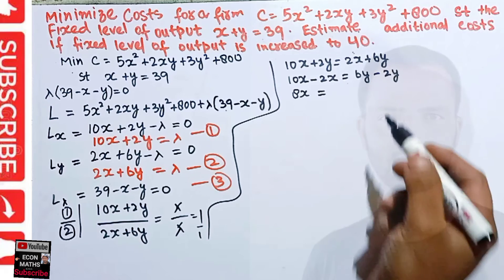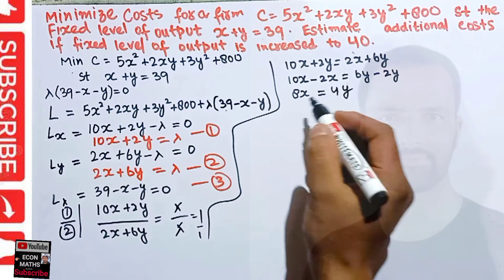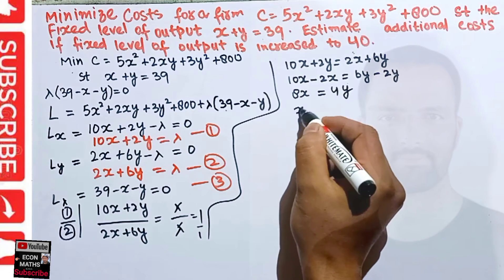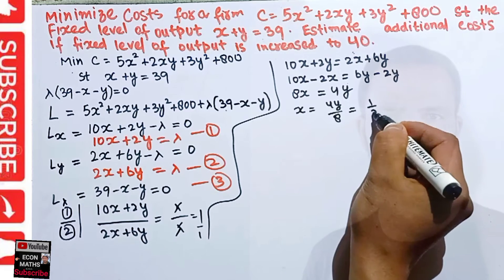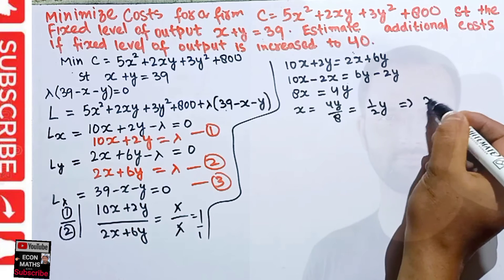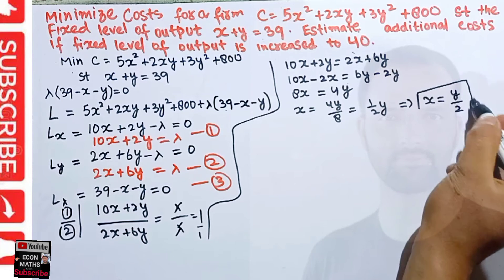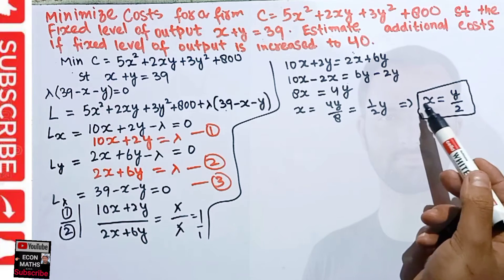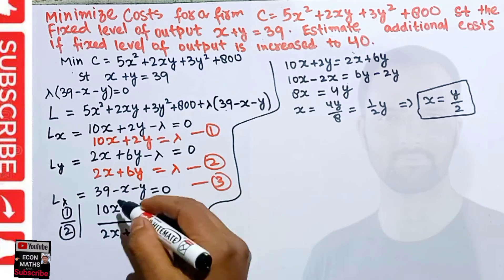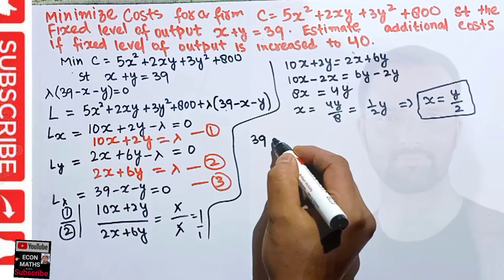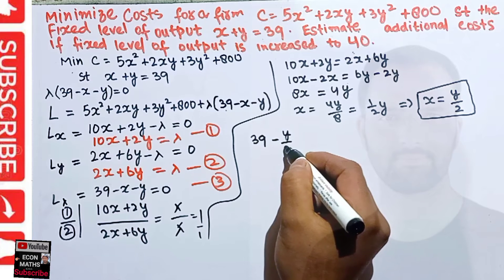So 8x = 4y, which means x = 4y/8 = y/2. Therefore x = y/2. Now we plug this value of x = y/2 into equation three: 39 − x − y = 0.